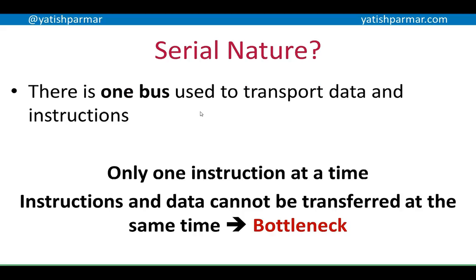Instructions and data both have to contend for control of the data bus. That's where we experience what we call the von Neumann bottleneck. So although you may have a very fast CPU and fast RAM, things slow down at that point because only one or the other can be transferred at a time.